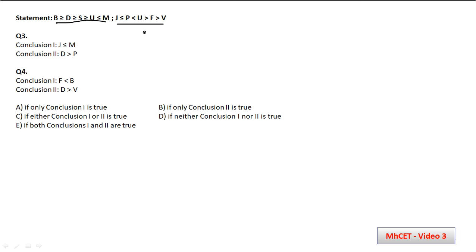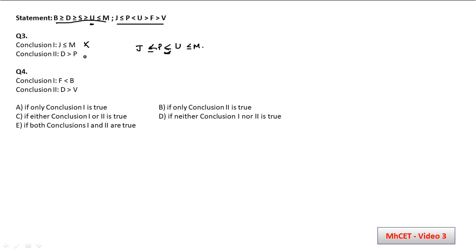The first conclusion asks: is J ≤ M? The common factor is U. From statement 2: J ≤ P < U, so J < U strictly. From statement 1: U ≤ M. Since J < U (strict inequality), J will definitely be less than M — but not necessarily less than or equal to M as a special case. The conclusion J ≤ M cannot be confirmed as written, so this conclusion does not follow.